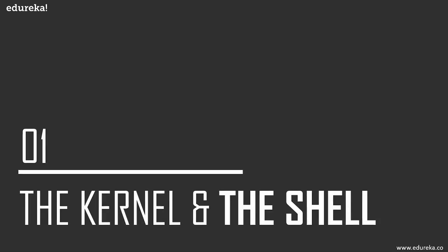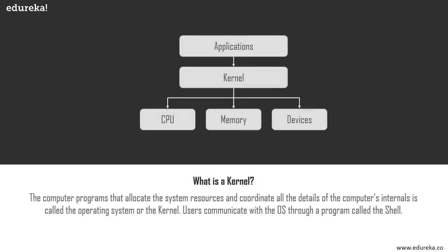First, the kernel and the shell. The computer programs that allocate system resources and coordinate all the details of the computer's internals is basically known as the kernel. The kernel is the heart of any operating system — it interacts with the hardware and handles most tasks like memory management, task scheduling, and file management.